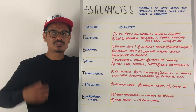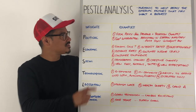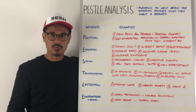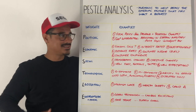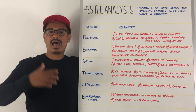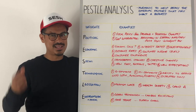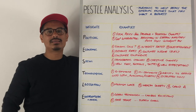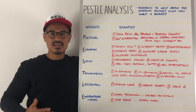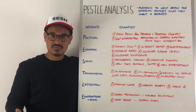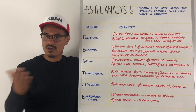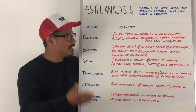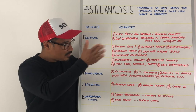We'll start with political. The classic political factors that may affect businesses — we'll start with fiscal policy. Fiscal policy is usually seen as government spending and taxation. A contemporary example of government spending would be spending that governments have done in the UK over furlough schemes, which is a classic example of how government spending has impacted businesses.